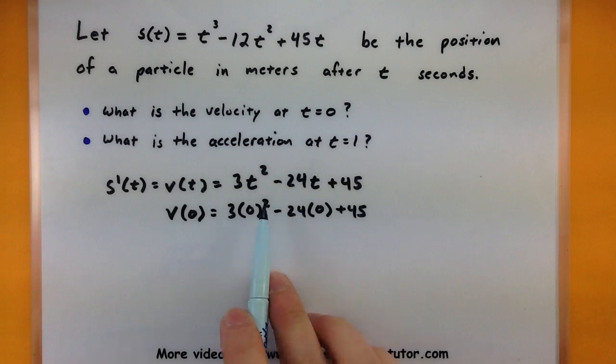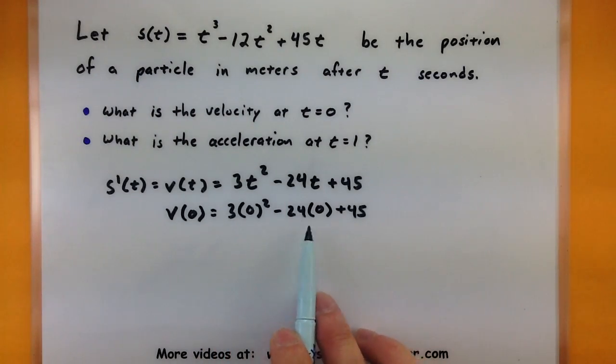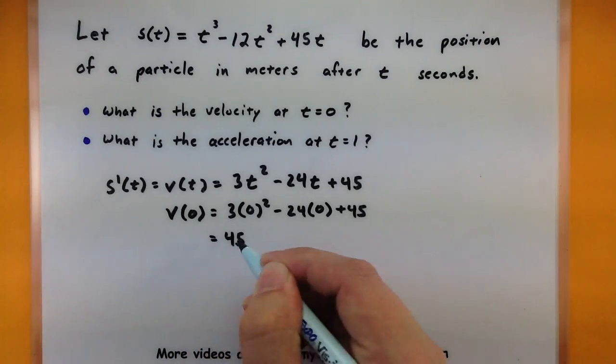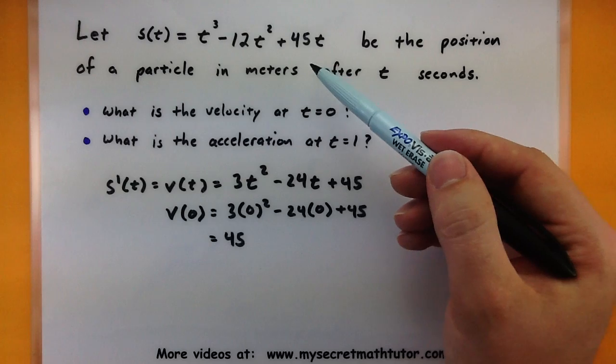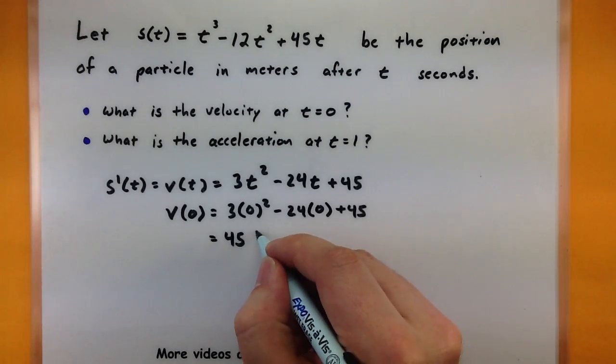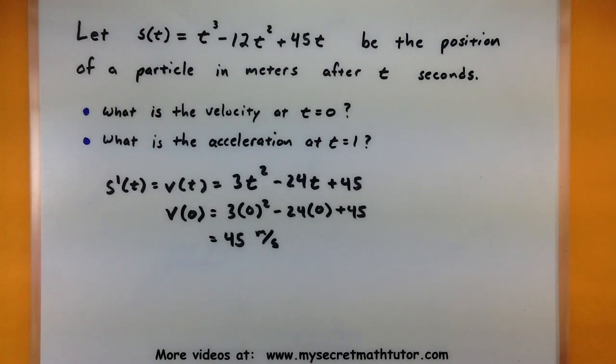Alright, that looks pretty good. I have zero for this entire term minus zero for this entire term, and the only thing that is left is 45. And since the position is in meters with respect to seconds, this would be in meters per second.